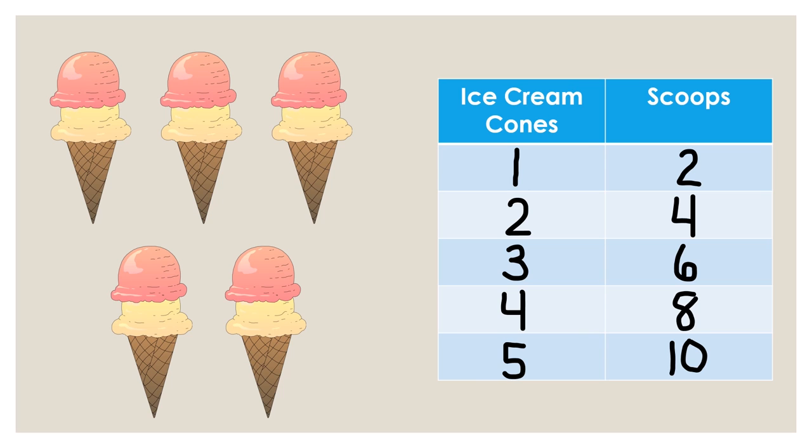Did you notice that the number of scoops in a row is always greater than the number of ice cream cones? Four scoops is greater than two cones. Ten scoops is greater than five cones.